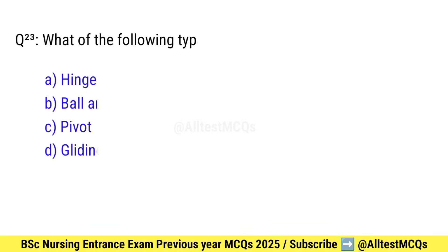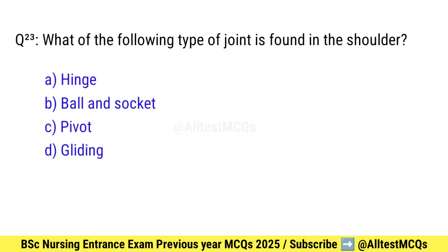Question number 23. Which type of joint is found in the shoulder? Right option is B: Ball and socket.